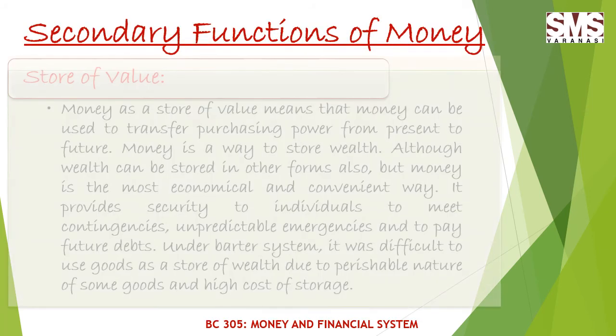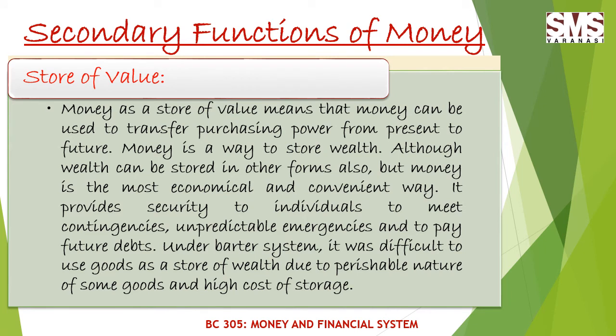The other secondary function of money is the store of value. Money serves as a store of value, meaning it can be used to transfer purchasing power from the present to the future. Money is a way to store wealth, and although wealth can be stored in other forms, money is the most economical and convenient way. It provides security to individuals to meet contingencies, unpredictable emergencies, and to pay future debts. Under the barter system it was very difficult to use goods as a store of wealth because of the perishable nature of some goods and the high cost of storage.